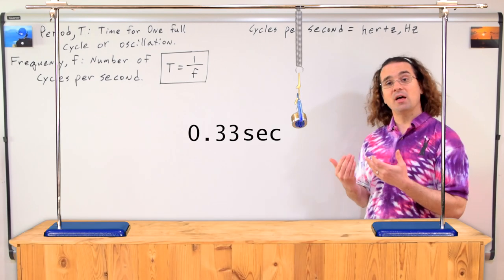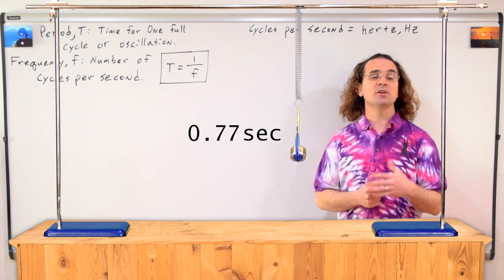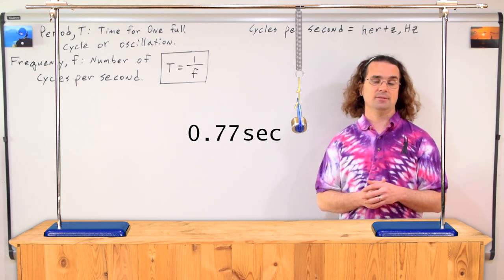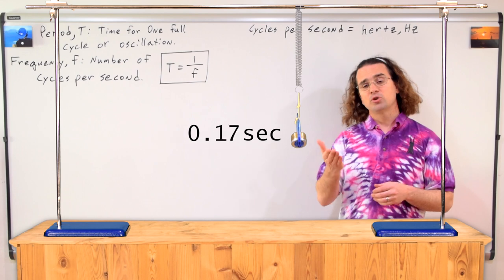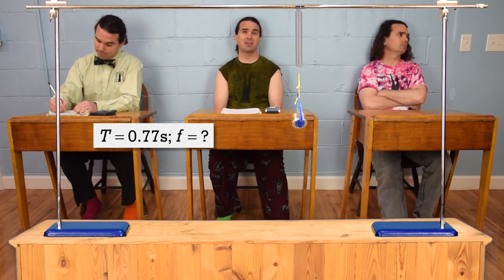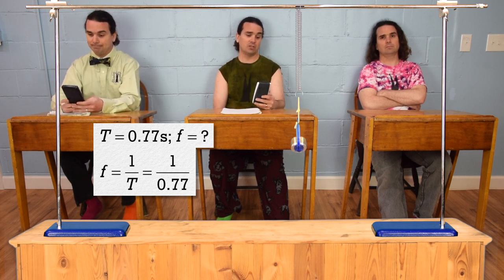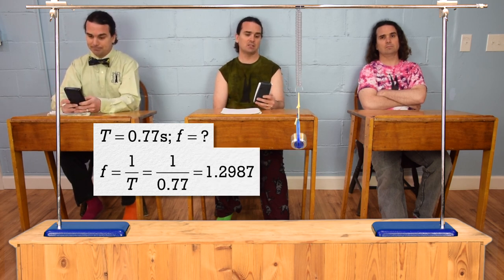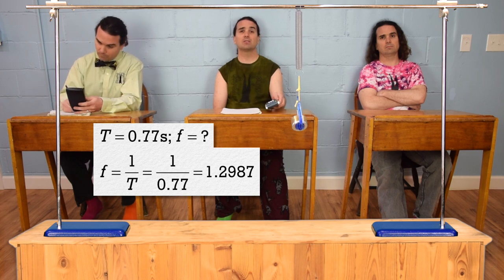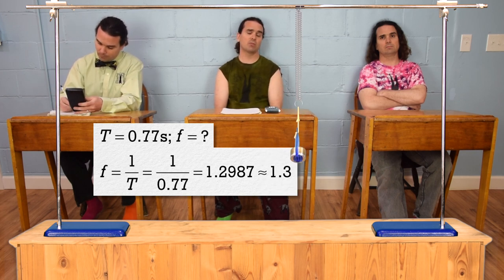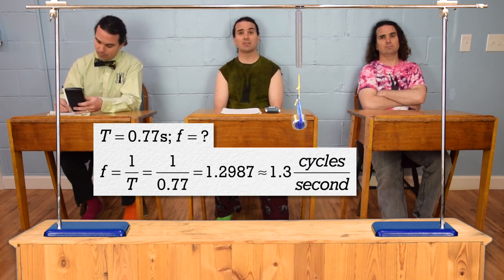Now, let's look at an example of a mass spring system that has a period of 0.77 seconds. Bobby, could you please determine its frequency? Well, frequency and period are inverses of one another. So, frequency equals 1 over period, or 1 divided by 0.77, which is 1.2987, or with two significant digits, 1.3 cycles per second or Hertz.